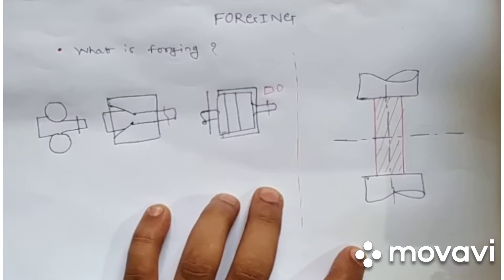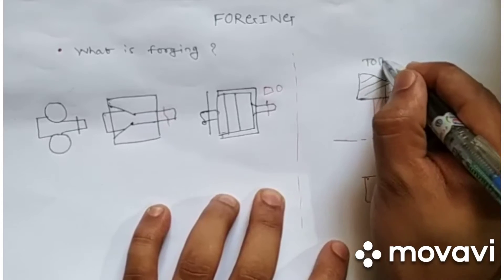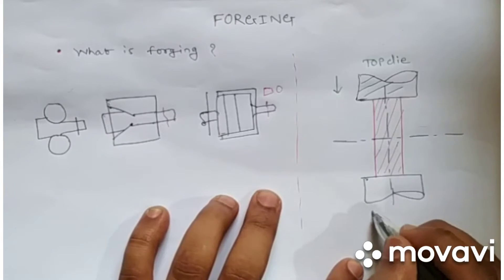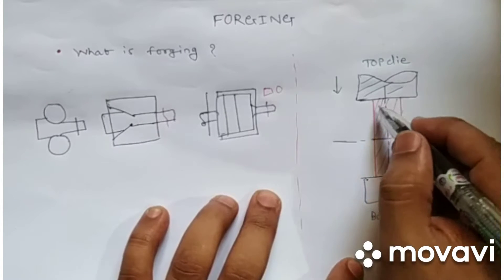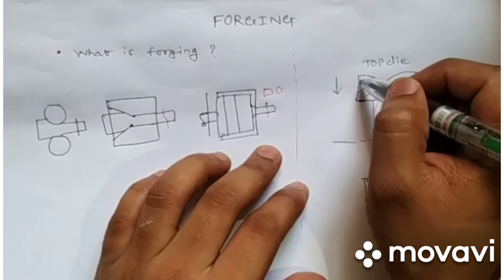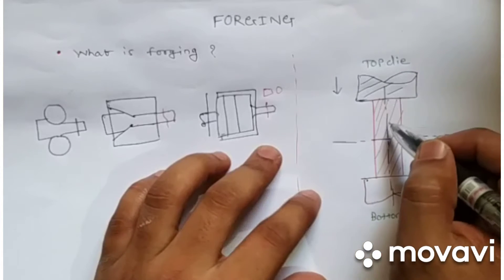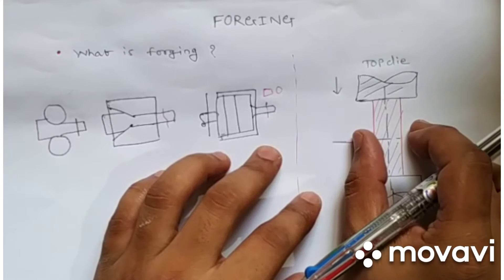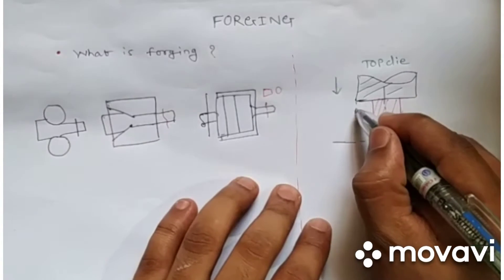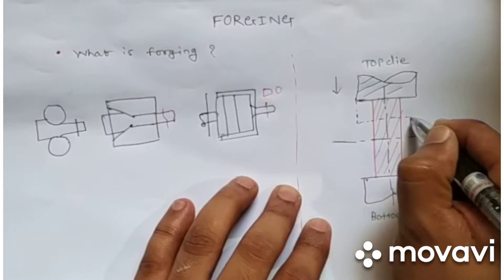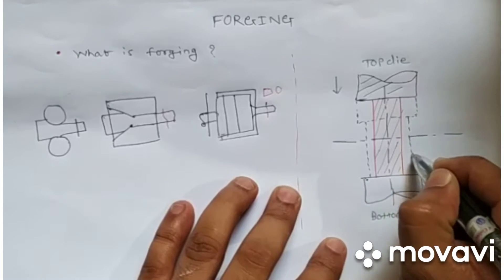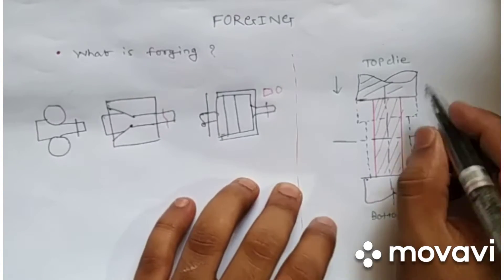In the forging process, there are two dies — a top die which is moving and a bottom die which is stationary. The material is kept in between these two dies. When we apply pressure or force on this material, the material will bulge out and we will get a deformed shape. The die comes downward and the material bulges outward.